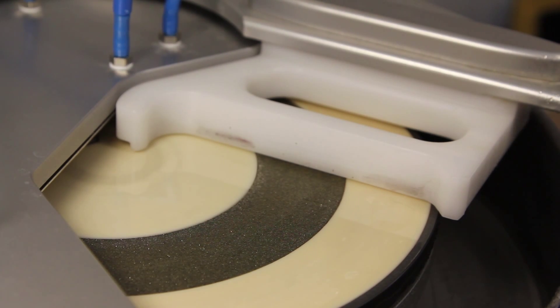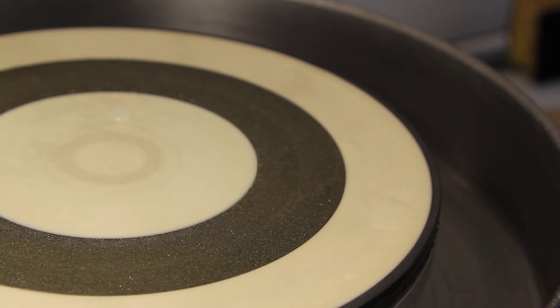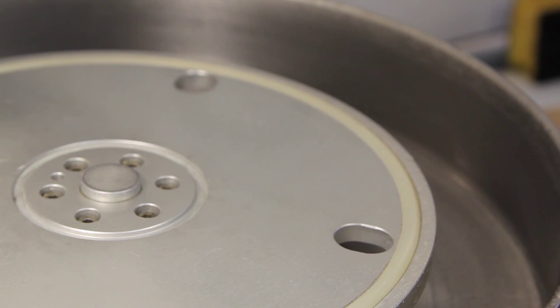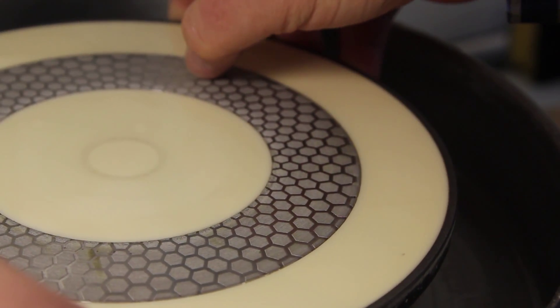Now I change the disk. I take out the rough one and I put in a 3500 microns.